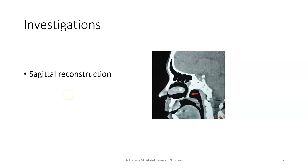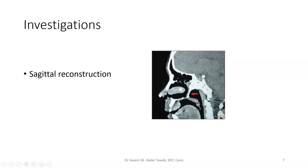This is a sagittal reconstruction. CT scan cuts are either coronal or axial; sagittal reconstruction is done only on good machines by combining coronal and axial cuts on the computer to create a side view of the head. Here you can see that the air in the nose is not passing to the nasopharynx, and there is a large atretic plate closing the posterior choana.